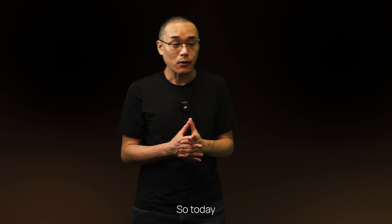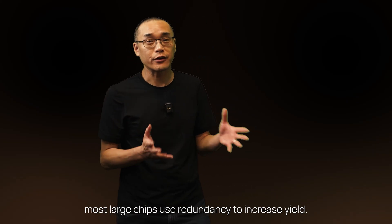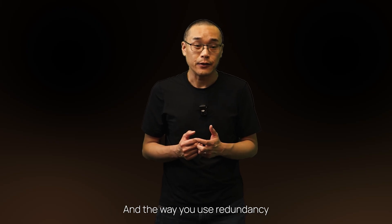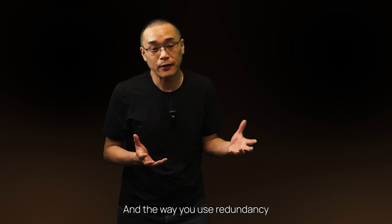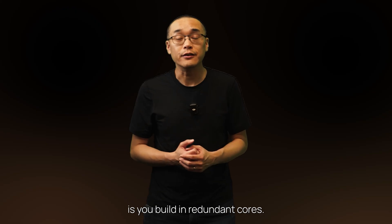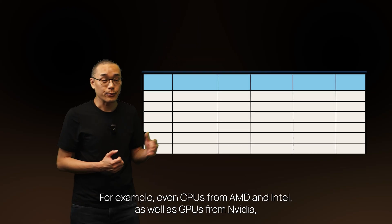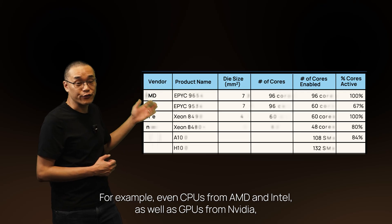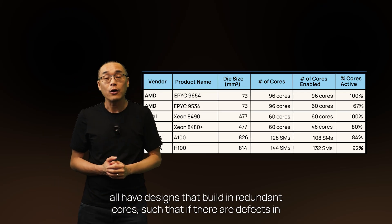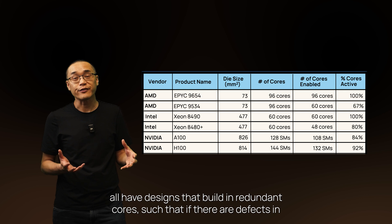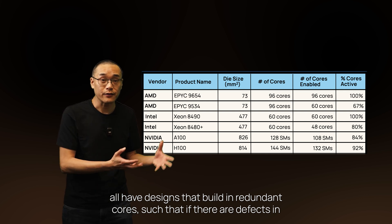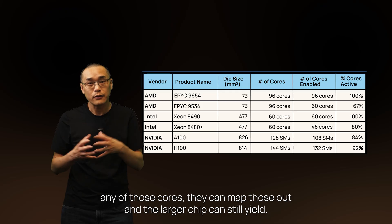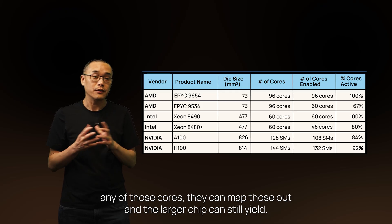Most large chips use redundancy to increase yield. The way you use redundancy is you build in redundant cores. For example, even CPUs from AMD and Intel, as well as GPUs from Nvidia, all have designs that build in redundant cores such that if there are defects in any of those cores, they can map those out and the larger chip can still yield.